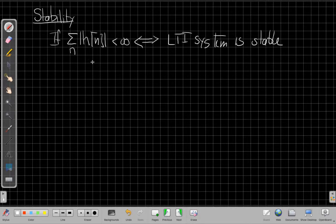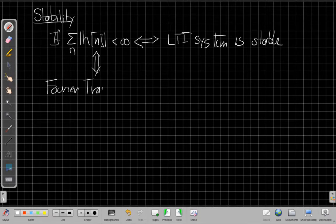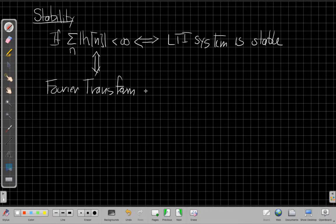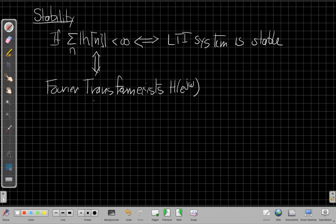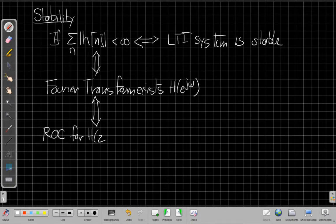But we've also seen since then, if the sum of an absolute sequence is finite, that's also equivalent to saying the Fourier transform exists. So the Fourier transform sum converges, so we know that we have a Fourier transform for every stable system. And then we've also just seen that the Fourier transform is the Z transform evaluated on the unit circle.